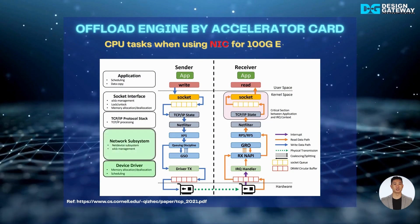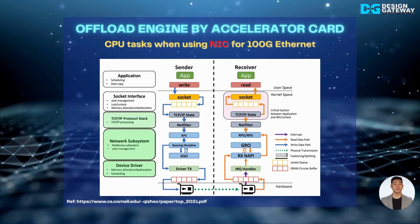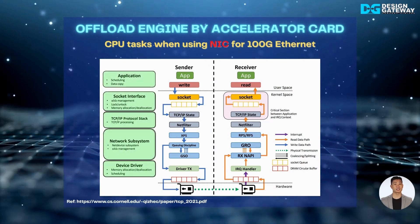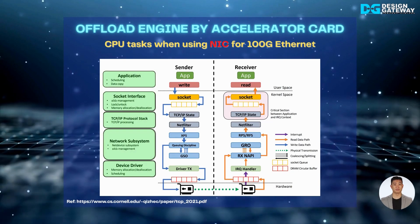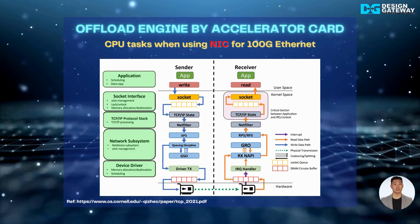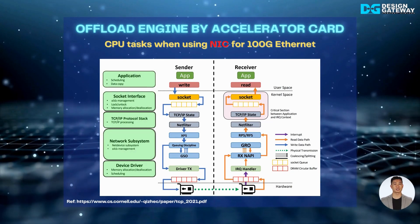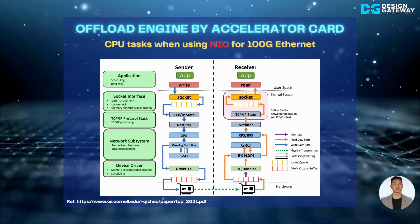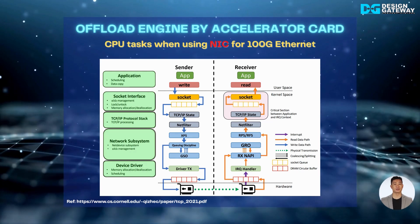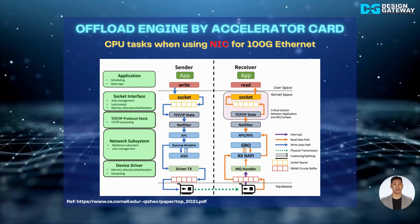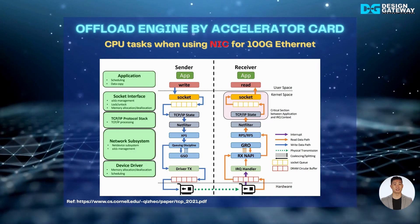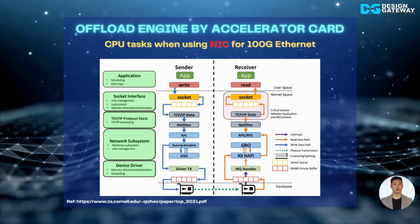Let us show the details of CPU tasks for handling TCP/IP packets by using the standard NIC. The software on the CPU consists of many parts for processing each network layer. Starting from the low layer: device driver, network subsystem, TCP/IP stack, socket interface, and the application are implemented.